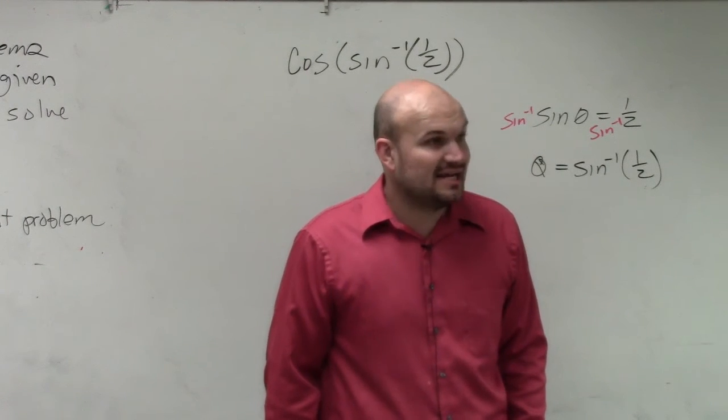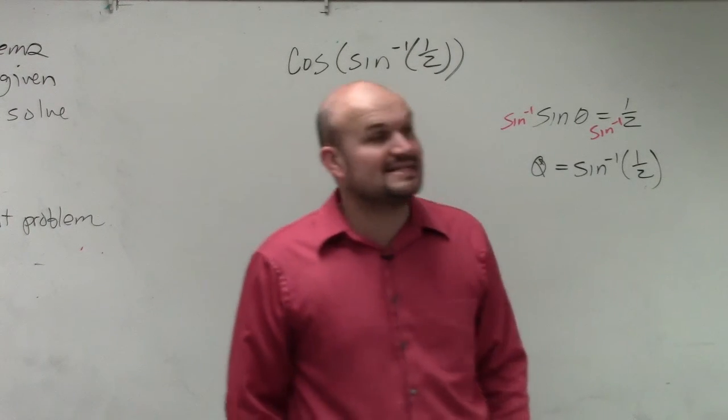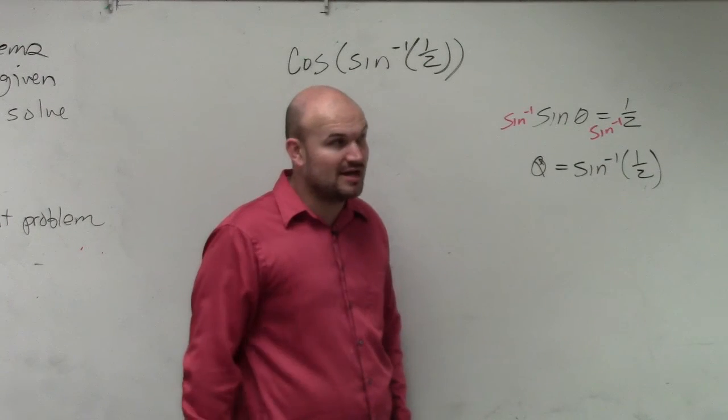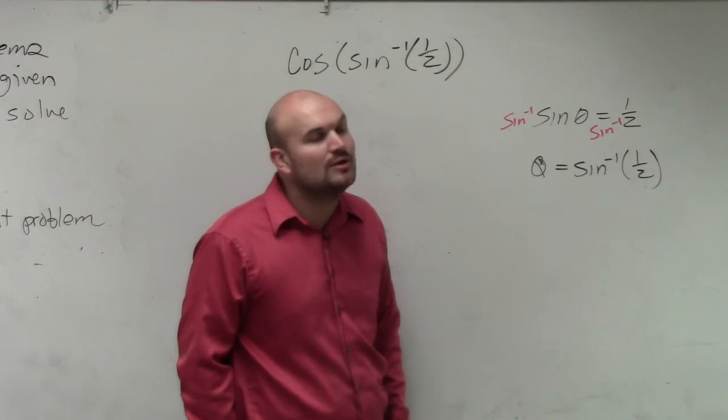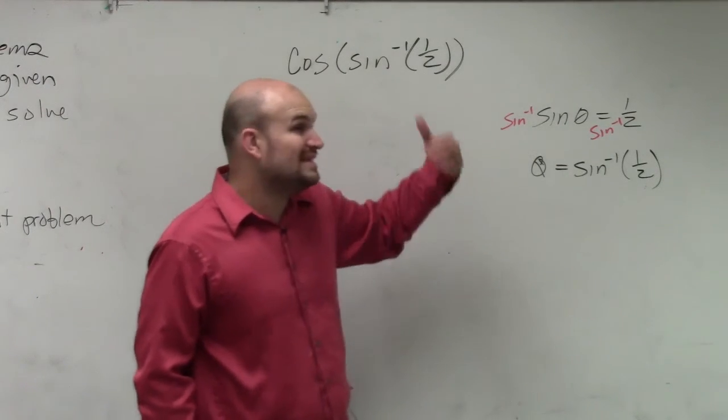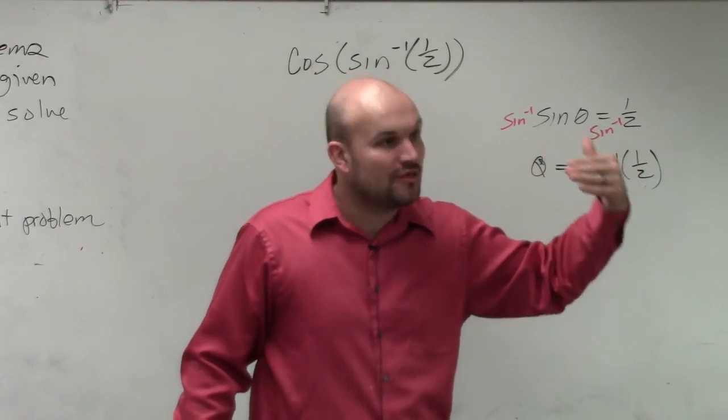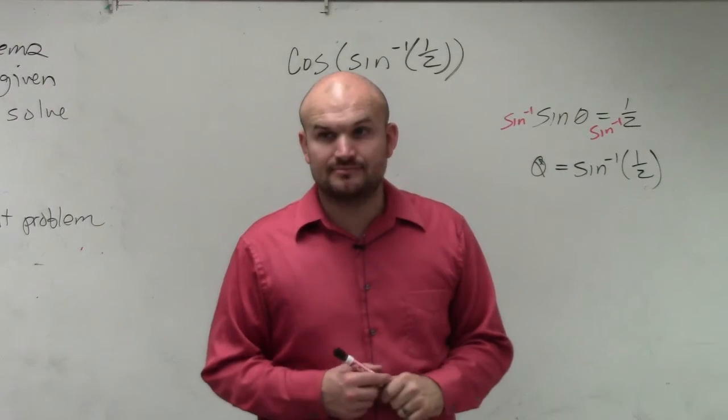The sine of your 30, 60, 90 triangle of 30 degrees is opposite over hypotenuse. What is the opposite side of that green triangle? 1 half. What is the Y coordinate of the coordinate point on the unit circle? 1 half. So the angle that produces 1 half when you take the sine of it is 30 degrees, or pi over 6.